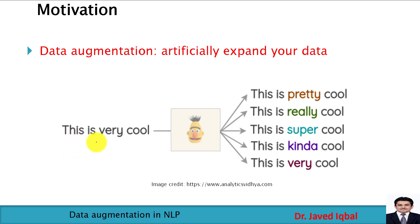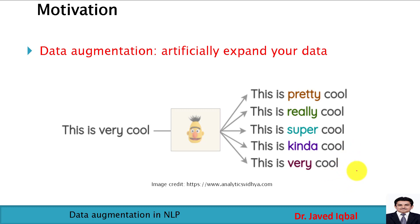We have a sentence: 'this is very cool.' After applying some data augmentation techniques, we can create different variations of the sentence. The first variation is 'this is pretty cool.' The second variation is 'this is really cool.' Other sentences that can be created are 'this is super cool,' 'this is kinda cool,' and 'this is very cool.' So all these are different variations of the original sentence. In a similar way, data augmentation techniques can be used to expand your original text data.